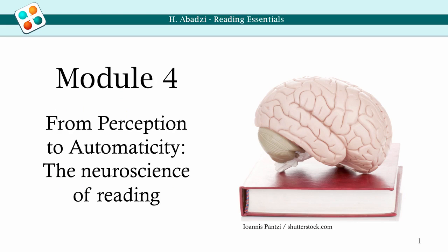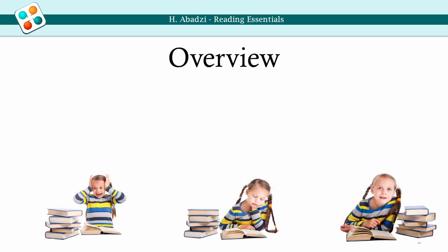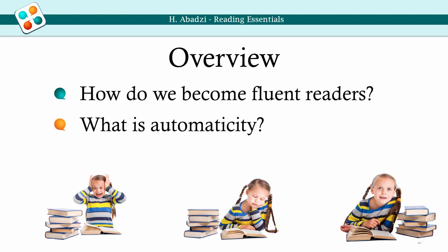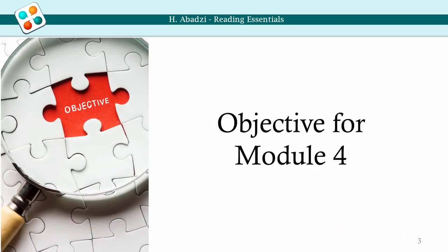Module 4: From Perception to Automaticity — The Neuroscience of Reading. Let's try to understand: how do we become fluent readers? What is automaticity? Why does it matter? In this module, you will learn more about a fascinating story and its implications for reading voluminous text. After completing this module, you will be able to explain the basic reading processes and the development of automaticity.